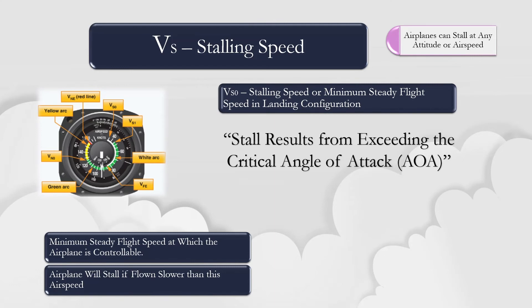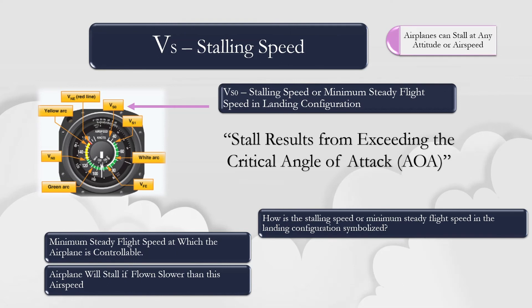The stall speed is the point at which the airflow over the top of the wing can no longer flow smoothly to the trailing edge of the wing. The VS0 speed is the stalling speed in the landing configuration and is indicated by the lower limit of the white arc, as shown in the chart on the left.